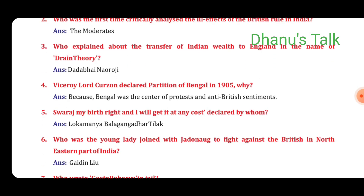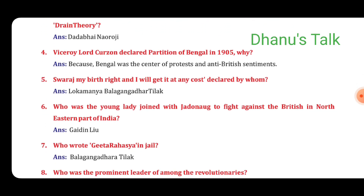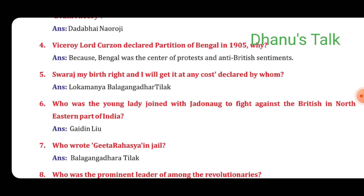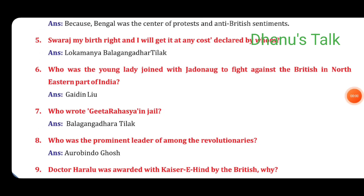Fourth: Viceroy Lord Curzon declared the partition of Bengal in 1905. Why? Answer: Because Bengal was the center of protest and anti-British sentiments. Fifth: 'Swaraj is my birthright and I will get it at any cost' — declared by whom? Answer: Lokamanya Bal Gangadhar Tilak. Sixth question: Who was the young lady who joined Jadonat to fight against the British in the north-eastern part of India? Answer: Gaidinliu.